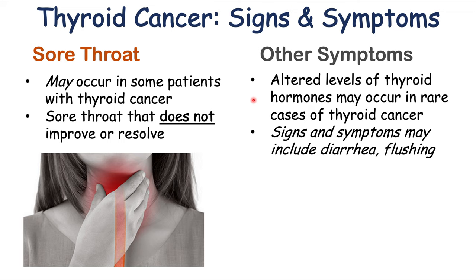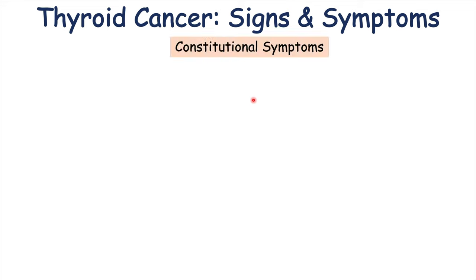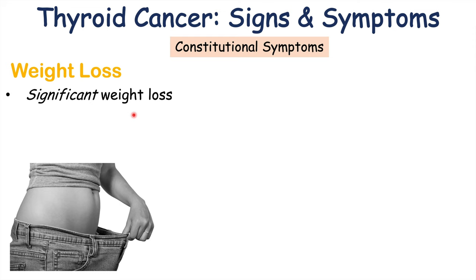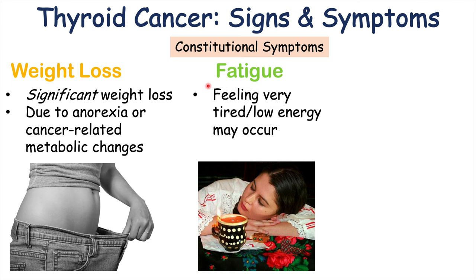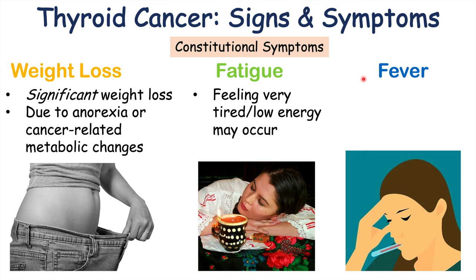Symptoms from altered thyroid hormones can include diarrhea and flushing. And because it is a cancer, we can also see constitutional symptoms, which include significant unintended weight loss occurring over the course of several months, due to anorexia or cancer-related metabolic changes. Fatigue — feeling very tired or having low energy — may also occur. Additionally, a fever with a temperature greater than 38 degrees Celsius and drenching night sweats could occur in patients with thyroid cancer.